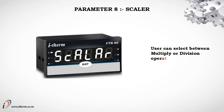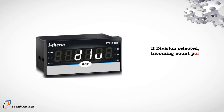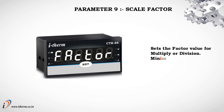Parameter 8: scalar. The user can select between multiply or division operation for the incoming count pulse. If multiply is selected, the incoming count pulse is multiplied by the factor selected by the user. If division is selected, the incoming count pulse is divided by the factor selected by the user. Parameter 9: scale factor. Sets the factor value for multiply or division. Minimum factor value equals 1; maximum factor value equals 99.